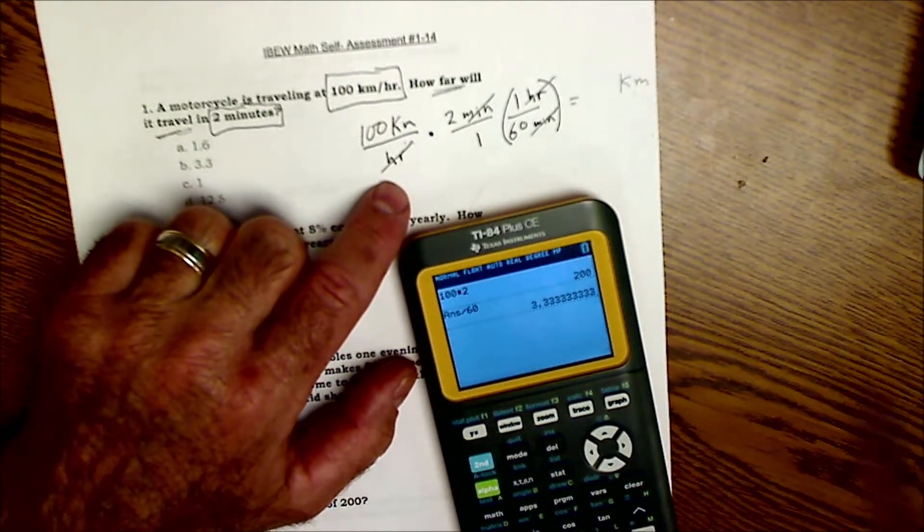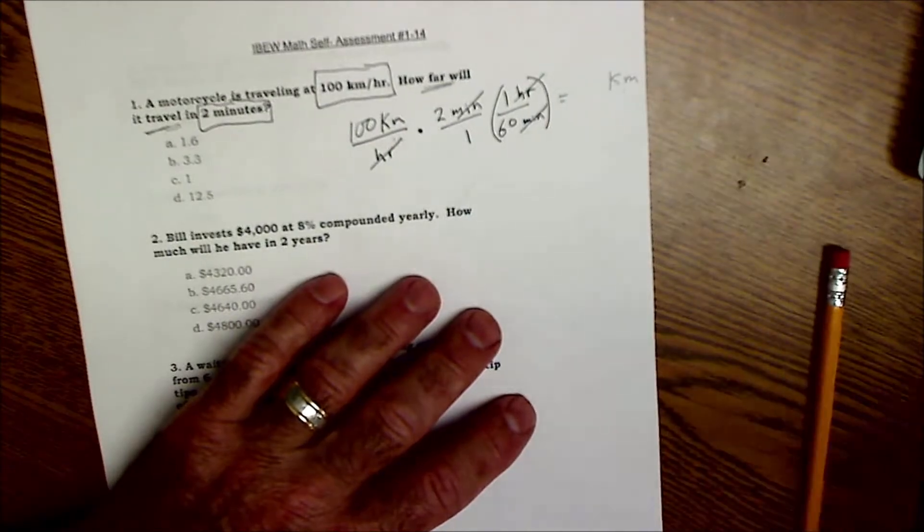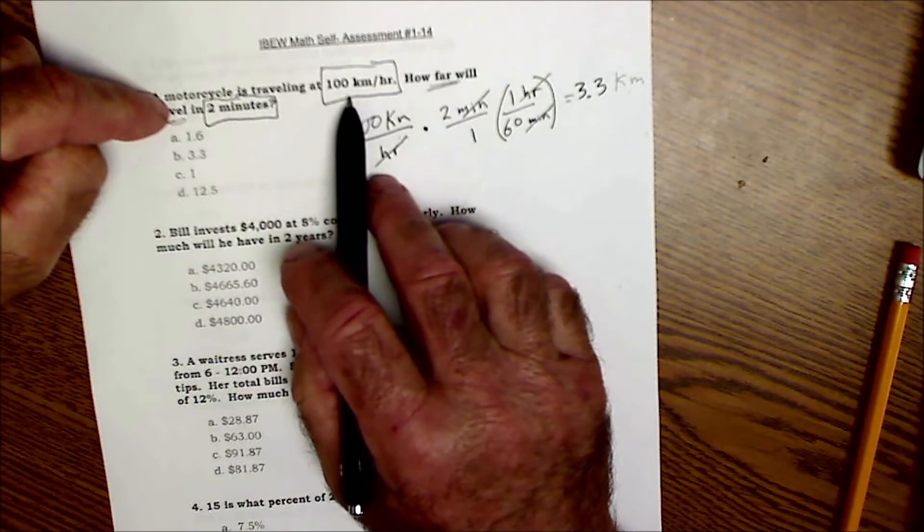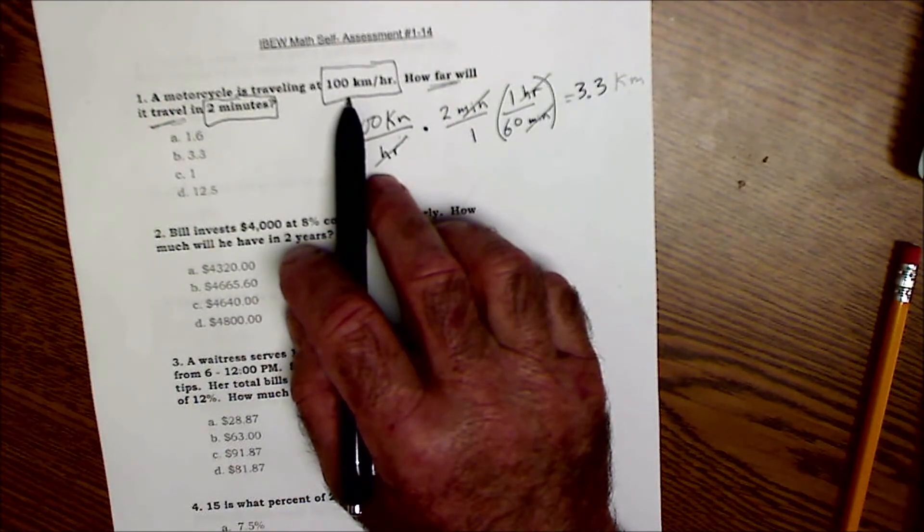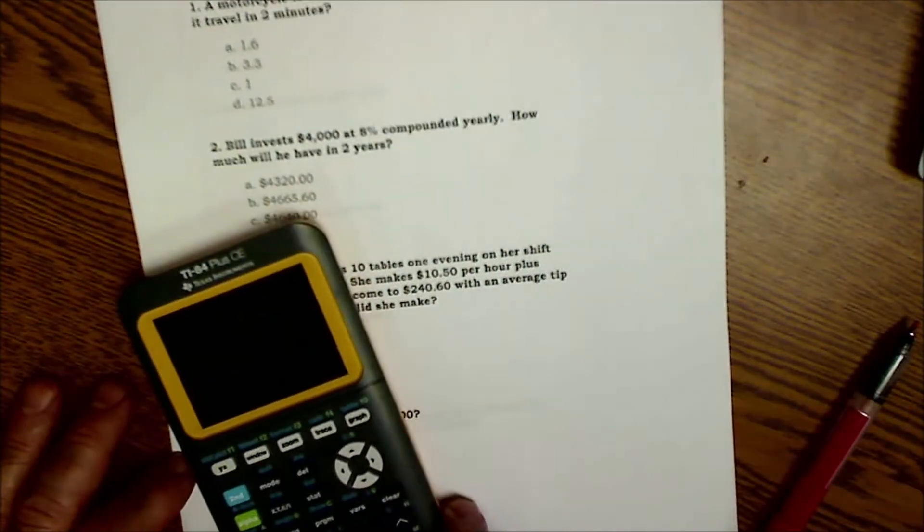And then my check is does that even make sense? Well you know you're traveling two minutes at 100 kilometers per hour, you'd expect it to be you know one thirtieth of 100 and that's about that right there, so that does make sense. Okay let's take a look at number two here.